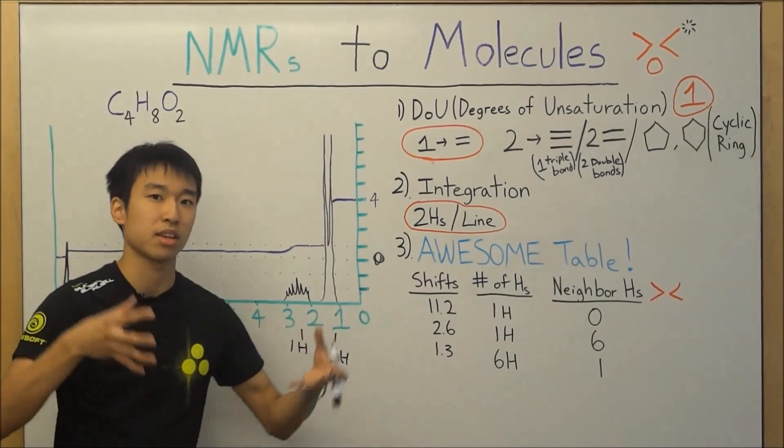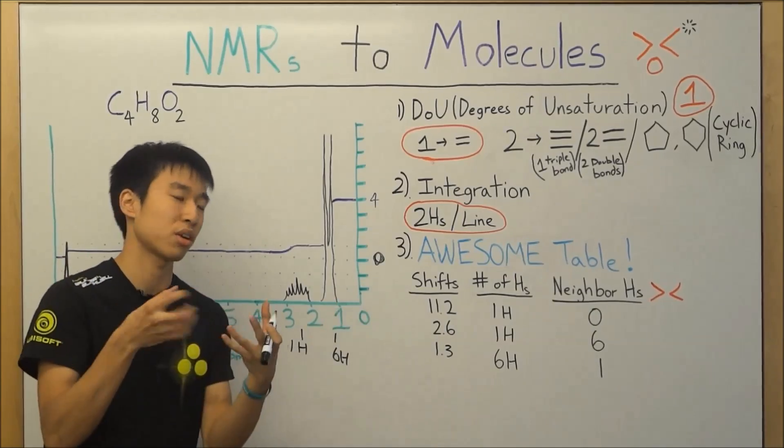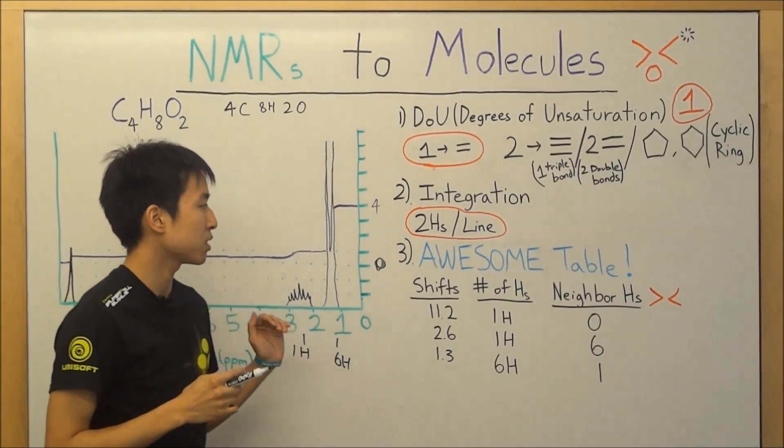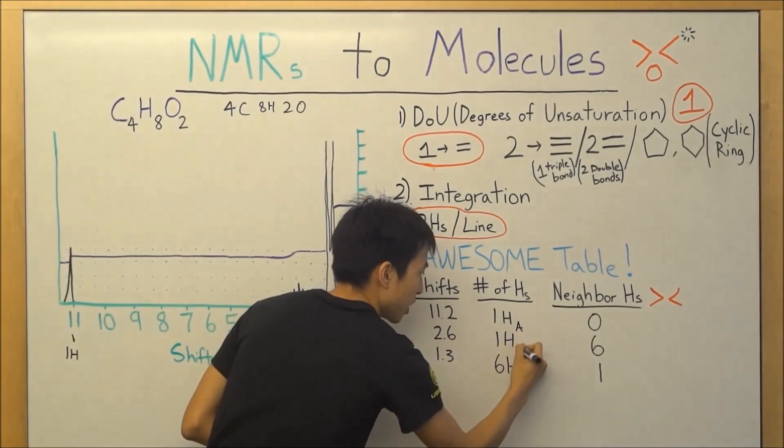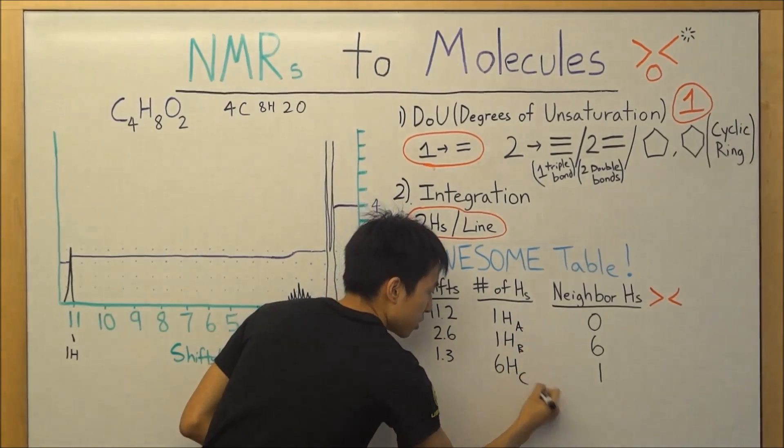And now we basically piece everything together. Okay, now that we have our puzzle pieces all organized, why don't we just label them? So I'm going to do H A, H B, and H C.